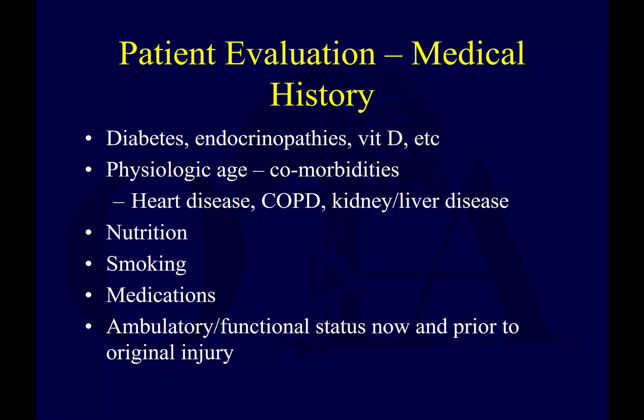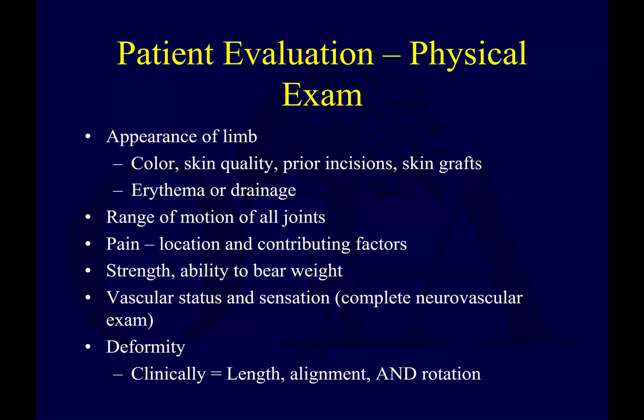Regarding comorbidities, you want to identify the big ones: are they diabetic? Is there an endocrinopathy, vitamin D deficiency that hasn't been addressed and needs to be treated? What is their physiologic age given additional comorbidities like heart disease or COPD? Establish their nutrition, understand whether they're a smoker or willing to quit, and note other medications — steroids and chemotherapy are big ones. Know what their ambulatory function was before and after the injury.